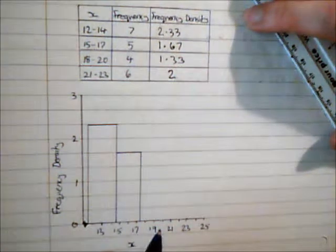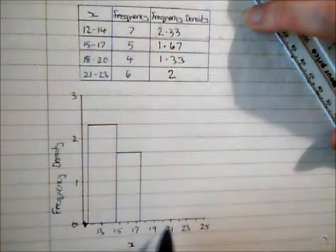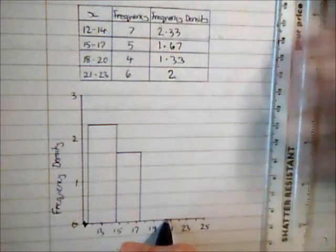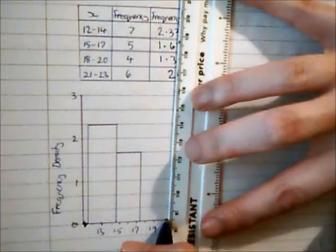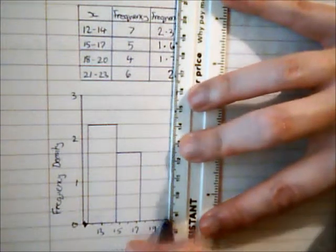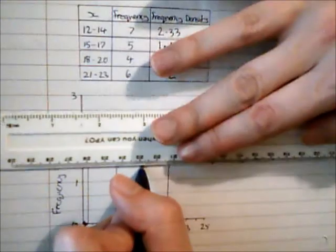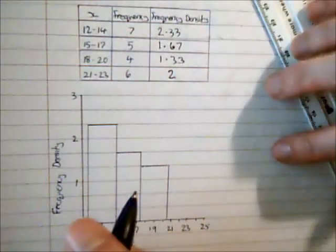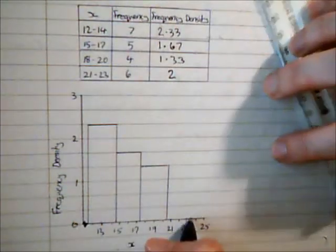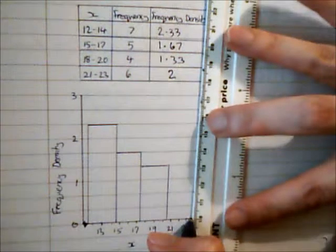And then from 17.5 to 20.5 is 1.33, so that's 1 and 1 third. And then finally from there up to 23.5, and that is up to 2.